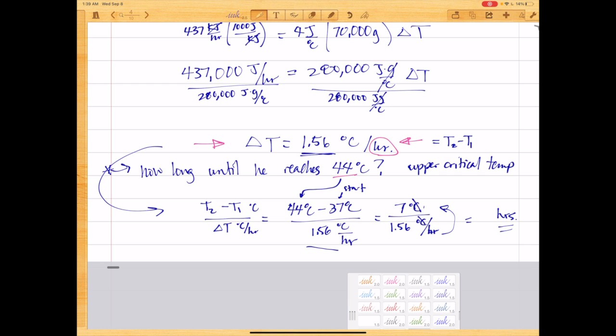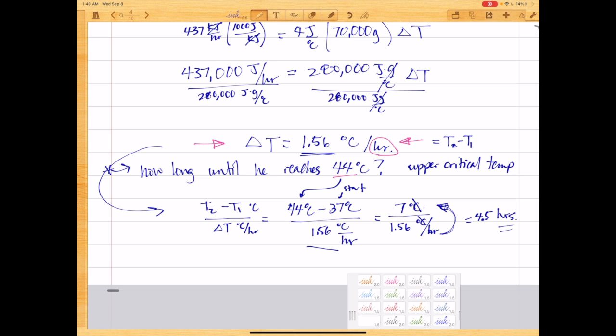the degrees Celsius will cancel, and the hours will go upstairs, and we'll be left with 4.5 hours, 4.48 hours. So it will take about 4.5 hours. This guy has about 4.5 hours until he reaches upper critical temperature and brain death, or brain damage.